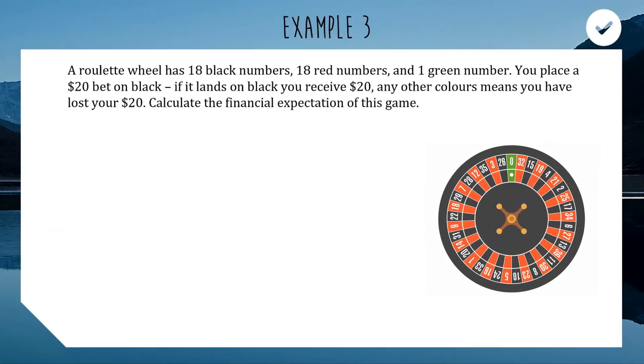On to the next one, we're looking at an application of expected value. You can use expected value to give you an understanding of where games are rigged for or against you. Here's an example using roulette. A roulette wheel has 18 black numbers, 18 red numbers, and one green zero, so 37 possible outcomes. You place a $20 bet on black. If it lands on black you win $20; if it lands on red or green you lose your $20. We'll turn this into a discrete probability function using a table.